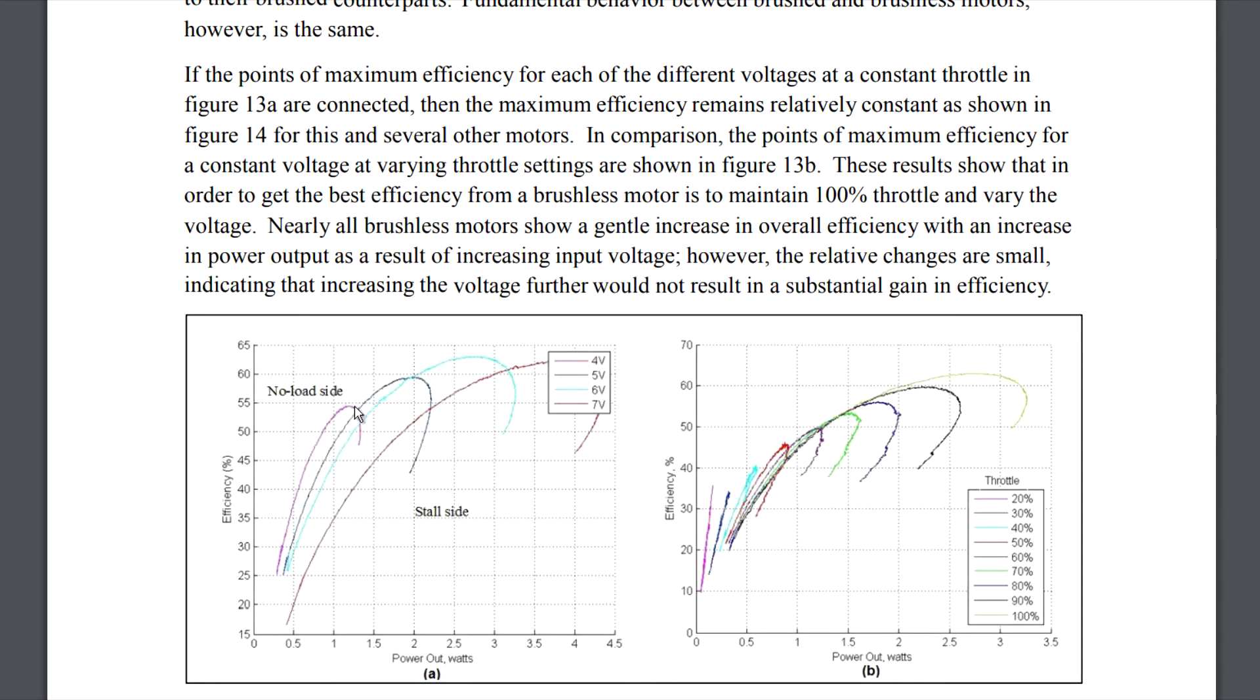And the difference between the highest and the lowest, the 4 and the 7 volts, so that's effectively one cell count difference between the highest and lowest voltage they tested. That's a really, really huge gap.